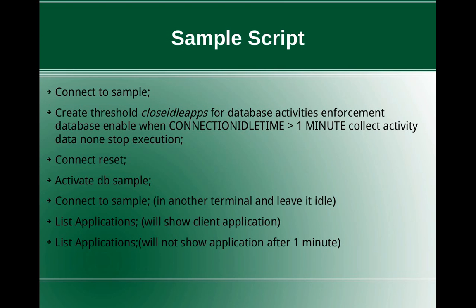Then you can issue list applications — it will show the client application from the previous connection. After one minute, if you issue one more list applications, you'll see that the command will not show the client application that was established earlier. It might have been returning some application handle — seven, ten, fifty, whatever — but that particular application handle will not be there. The database will still be in activated state; it is only forcing off that particular client connection.